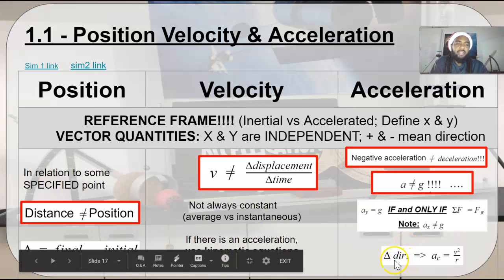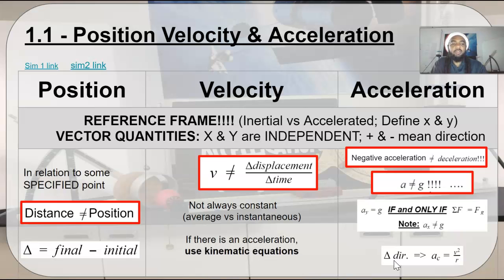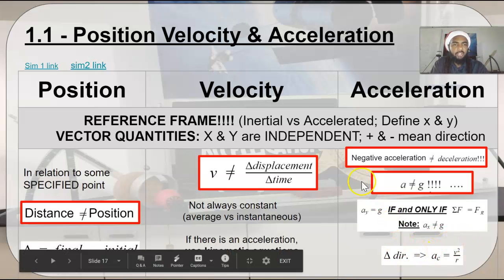Note that acceleration in the x direction is never equal to g, unless it's some weird coincidence. Also, if we have acceleration due to changing direction, that's called centripetal acceleration, and that's given by your v squared over r. Whether or not that v is constant, instantaneous acceleration centripetally is going to be equal to your v squared divided by r, where r is your radius of curvature.